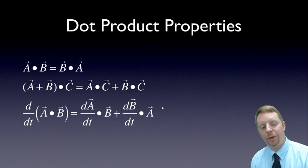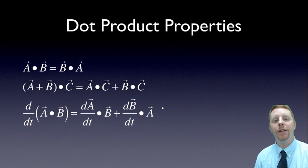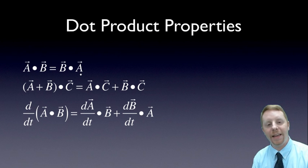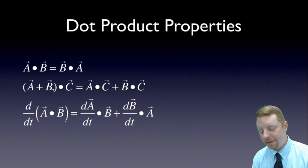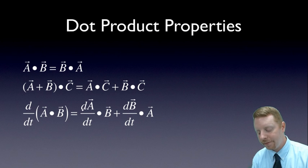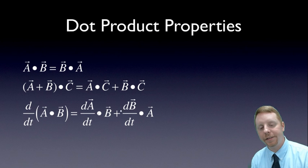There are some dot product properties we should go over as well. The commutative property: A·B equals B·A. The associative property: (A+B)·C equals A·C + B·C. And when you get to derivatives, the derivative of A·B equals A'·B plus B'·A.